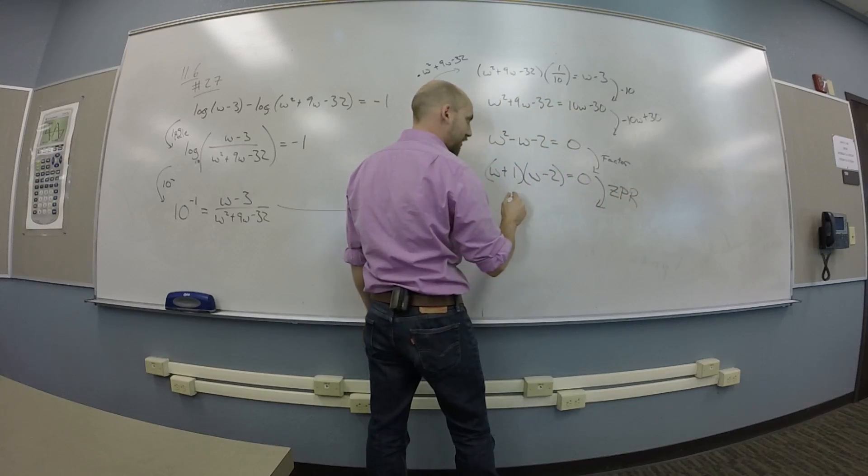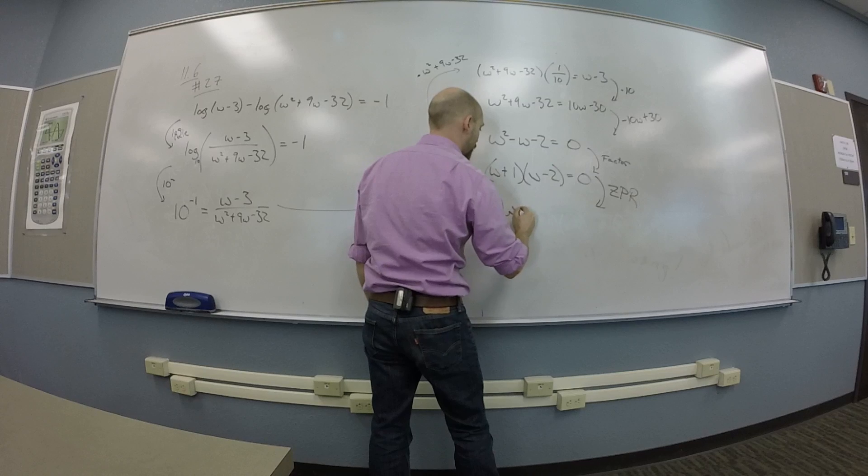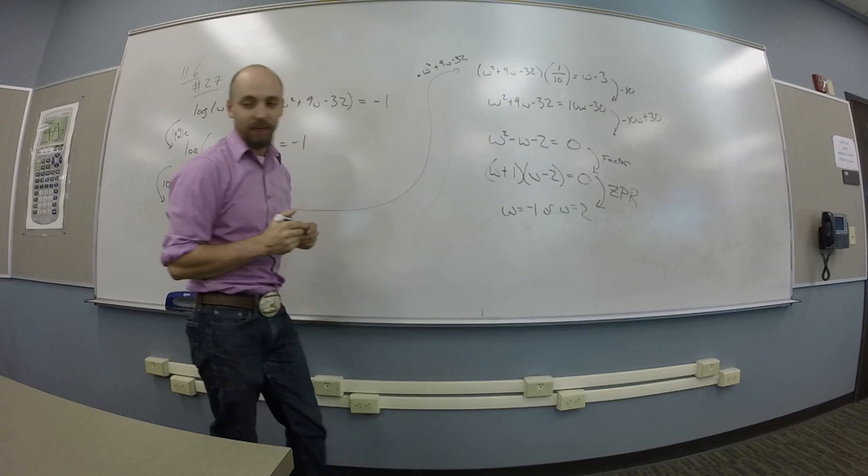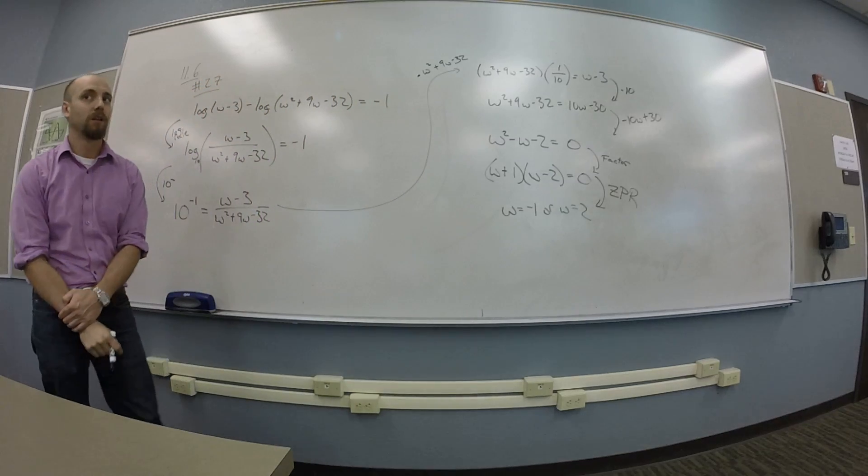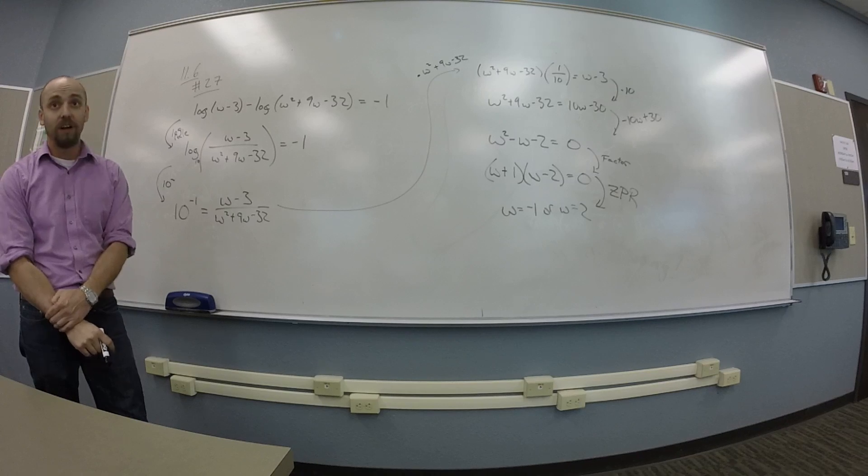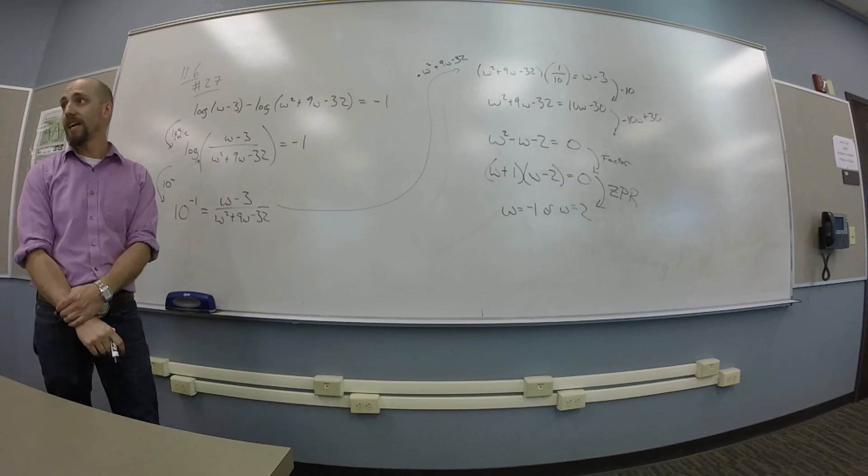So your product rule W equals 1 or negative 1 or positive 2? Okay, so we're going to ZPR this thing. So we're going to get W is minus 1 or W is 2. And then we should check do those work, right?